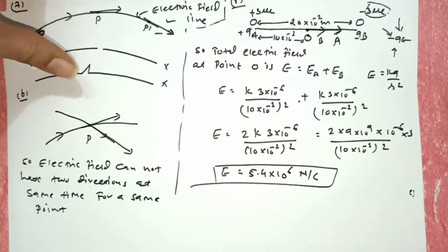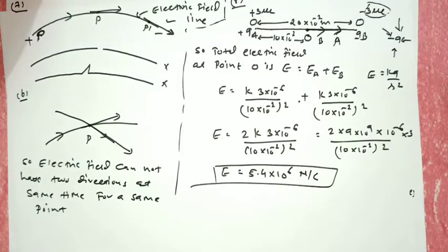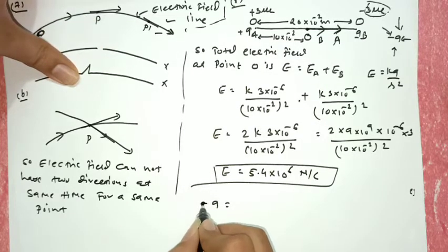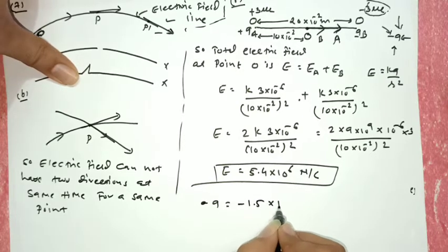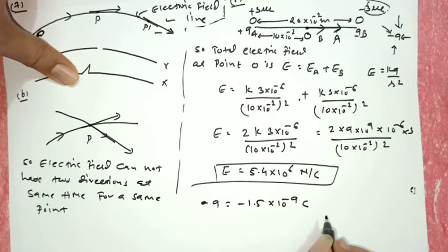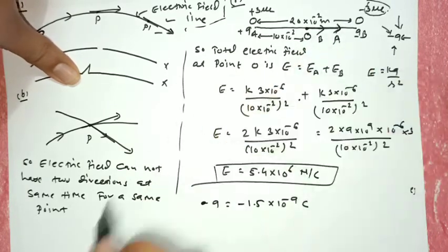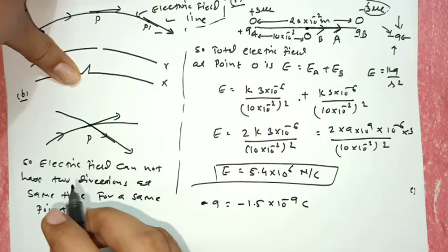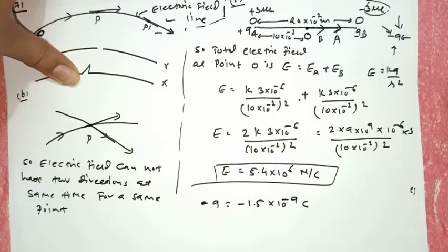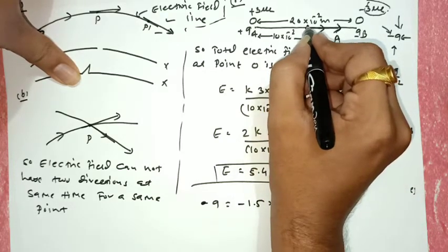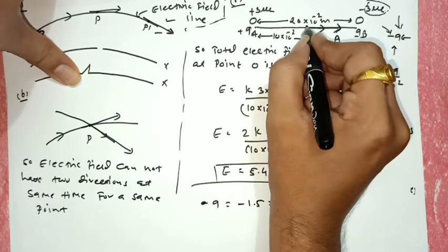Now the second part: a negative test charge of magnitude Q = -1.5 × 10⁻⁹ coulomb is placed at point O, the center point. We need to find what force is experienced by this test charge.